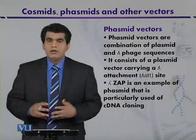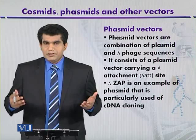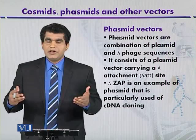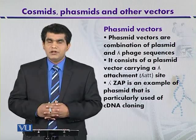Phasmid vectors. Phasmids are a combination of plasmid DNA plus the lambda genome, where the lambda genome includes the attachment site. Such a combination of plasmid DNA including the lambda attachment site is called a phasmid vector.